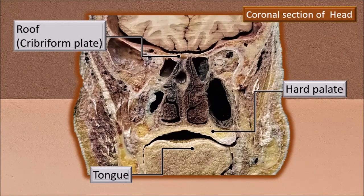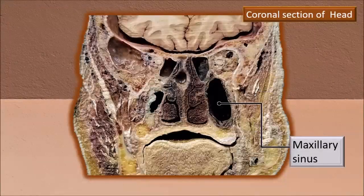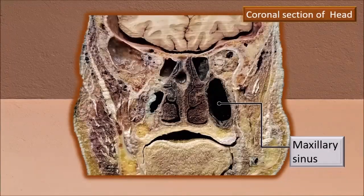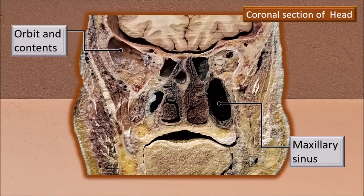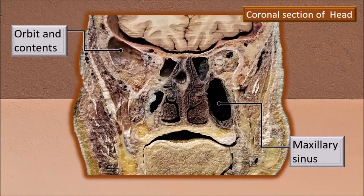Below the hard palate you can see the dorsum of the tongue. The maxillary sinus is lateral to the lateral wall of the nasal cavity and immediately below the orbit. In fact, the floor of the orbit is also the roof of the maxillary sinus. The orbits and their contents are visible on both sides, though a slight obliquity in the section causes a discrepancy in the size of the orbital cavities.